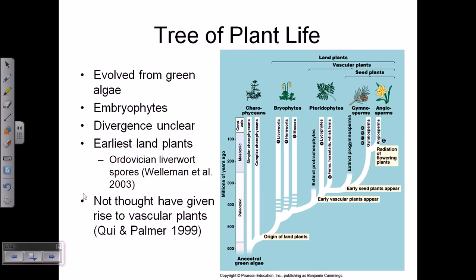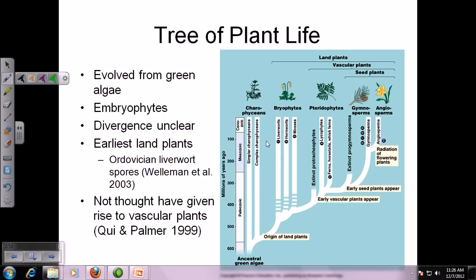Looking at this picture, we can see how the evolution tree is actually taking place. Starting from an ancestral green algae at very primitive eras, we first get charophytes, then bryophytes, then pteridophytes, then gymnosperms, and finally angiosperms, which are the modern day flower and fruit carrying plants.